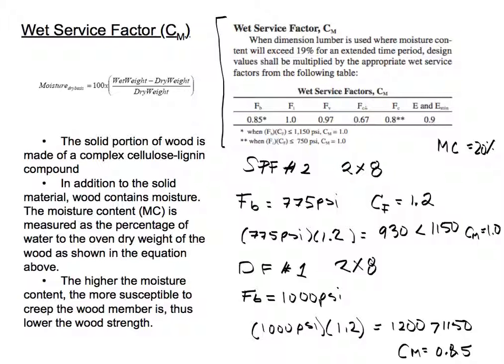We have our wet service factor CM table. We have bending stress, stress in tension, bending stress tension and shear, bending stress perpendicular to grain, compression stress perpendicular to the grain, and parallel to the grain, and then we have modulus for bending and for compression.